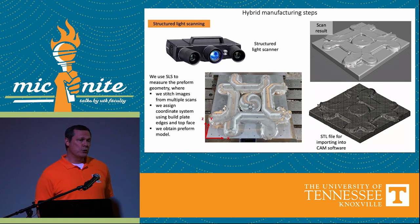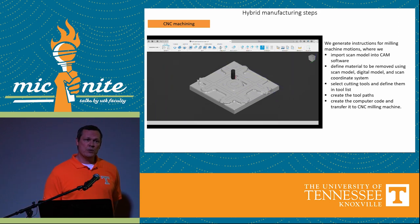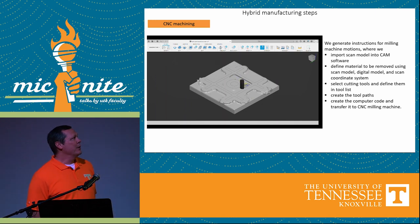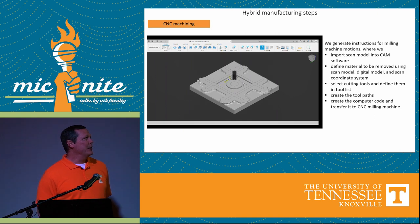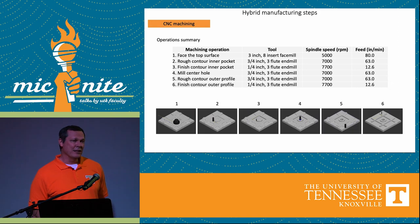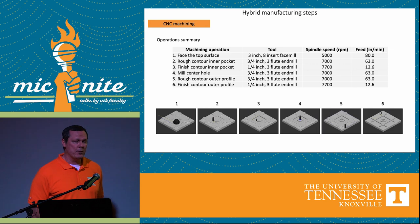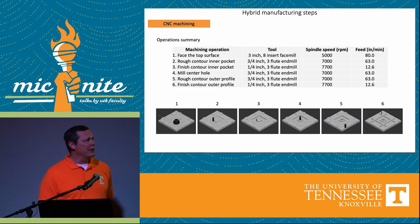This shows the tool paths that we generated to remove the material and reveal the geometry that we want. So this is a digital approach where we have a scan that's digital, we have tool paths that we present in order to remove material, and then we arrive at the geometry we wanted from our digital model. The machining operations completed were a facing operation, internal contouring operations, external contouring operations, and finally we end up with the final part.